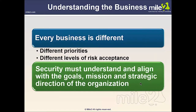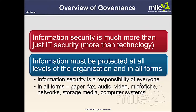Businesses have their reason for being in business — different functions, different priorities, and different tolerances for risk. When we think of security for the company, we have to understand and align with the goals, mission, and strategic direction of the organization. IT people sometimes think purely in terms of security with no concern for whether the security implemented is so restrictive that it impairs functionality. We want to make sure that we understand the organization — it's about the business, not just the IT department.